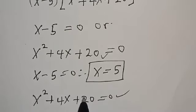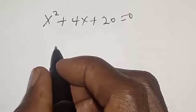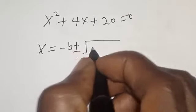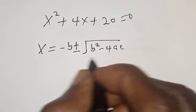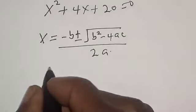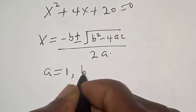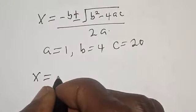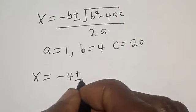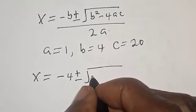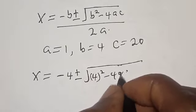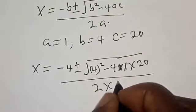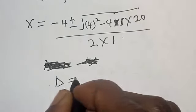For the second case, x squared plus 4x plus 20 equals 0, this is a quadratic equation. We solve it using the quadratic formula: x equals minus B plus or minus square root of B squared minus 4AC, all over 2A. Here A equals 1, B equals 4, and C equals 20. So x equals minus 4 plus or minus square root of 4 squared minus 4 times 1 times 20, over 2 times 1.